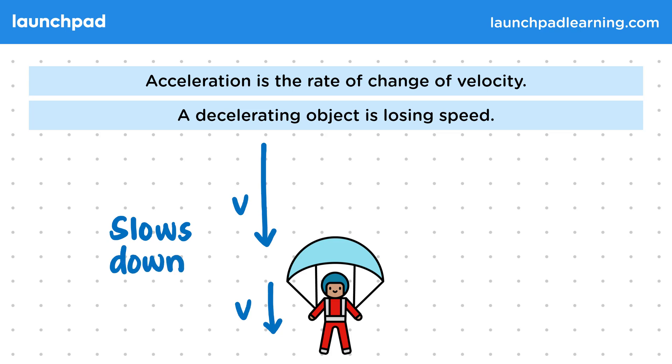This time, our acceleration vector is directed opposite to the velocity vector. We say there is a negative acceleration. It's important to remember that whether an acceleration vector causes velocity to increase or decrease doesn't depend on whether the acceleration is directed up, down, left or right. It depends on whether it's in the same direction or the opposite direction to the velocity.